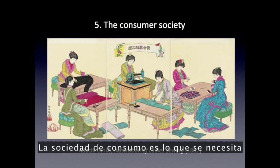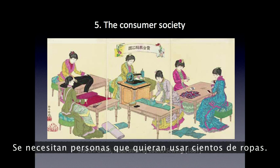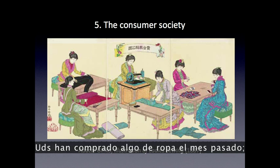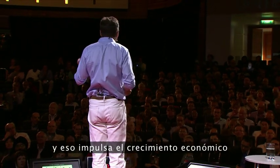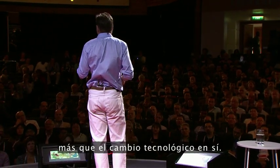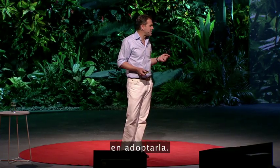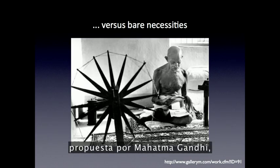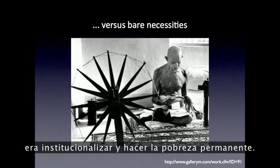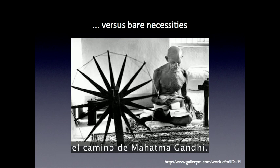The consumer society is what you need for the Industrial Revolution to have a point. You need people to want to wear tons of clothes — you've all bought an article of clothing in the last month, I guarantee it. That's the consumer society, and it propels economic growth more than even technological change itself. Japan was the first non-Western society to embrace it. The alternative, proposed by Mahatma Gandhi, was to institutionalize and make poverty permanent. Very few Indians today wish that India had gone down that road.